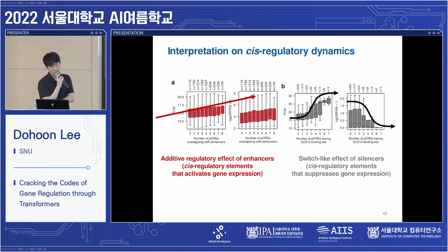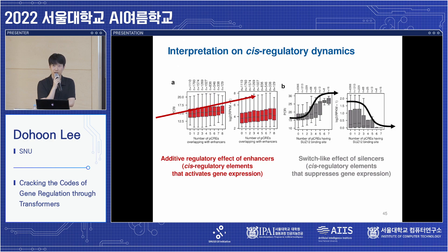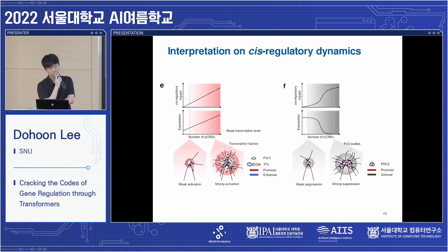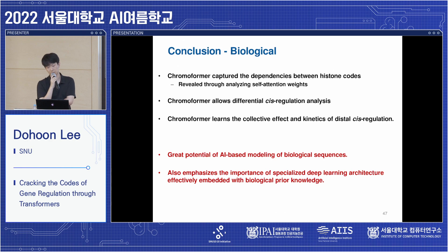Finally, I examined the association between the number of cis-regulatory elements and PCRI values, revealing that cis-regulation for the activation of genes had linear dynamics, while cis-regulation for the suppression of genes had switch-like or logistic dynamics. We could propose a hypothetical model based on this. The biological conclusions from the model interpretation are: Chromoformer captured dependencies between histone codes, it allows differential cis-regulation analysis using latent embeddings, and it learned the kinetics of cis-regulation.